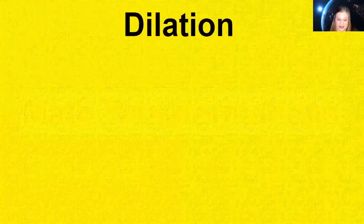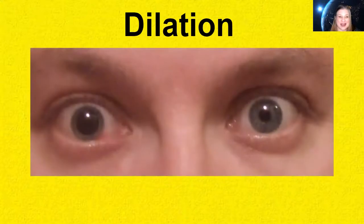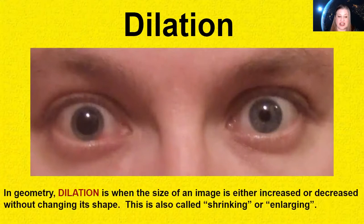So let's start off with dilation. If you're like me when you hear the word dilation you probably think of the pupils in my eyes. So we have a kind of creepy but kind of cool picture here where you can see that one eye has a pupil that's dilated or bigger than the other. In geometry dilation is when the size of an image is either increased or decreased without changing its shape. This is also called shrinking for getting smaller or enlarging for getting bigger.